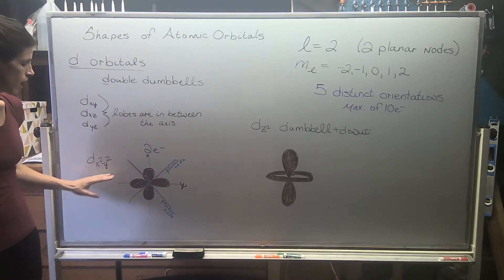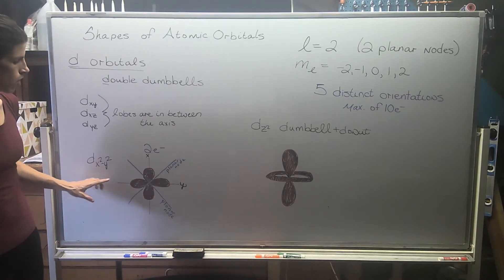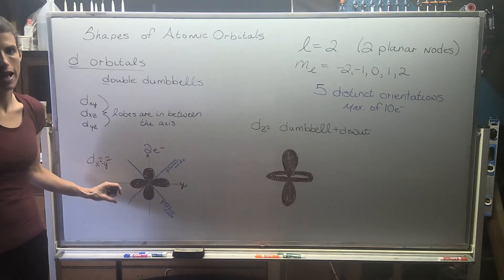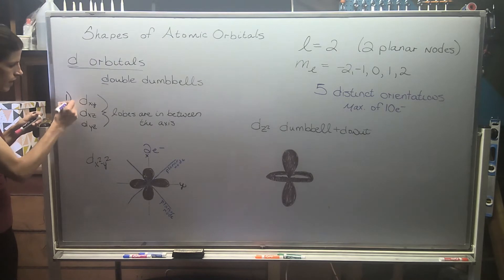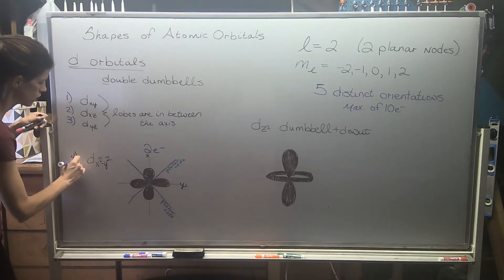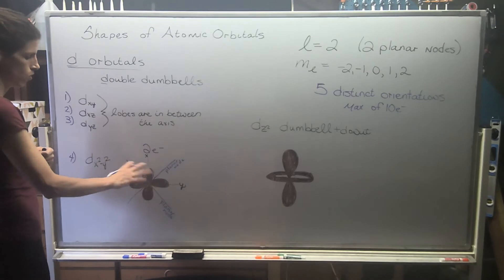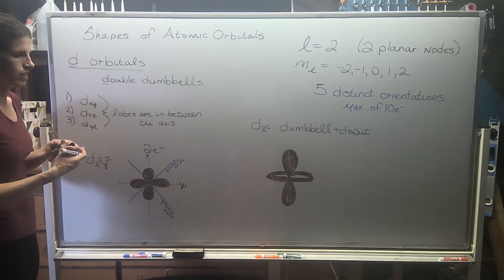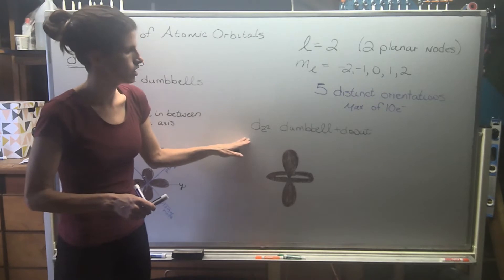I drew in my planar nodes on my dx squared, y squared. I find this to be one of the easier d orbitals to recognize because the lobes are oriented or aligned with the x and y axis. dxy, dxz, and dyz, their lobes are going to be in between the axes and so they're a little bit harder to identify. So here we have one orientation, this is our second orientation, third orientation, dx squared, y squared is our fourth orientation. On your lecture handout you have two different images of the same orientation, the same orbital, they just moved it in space, so you're looking at the same thing two times. One, two, three, four, and our last orientation is going to be the dz squared.